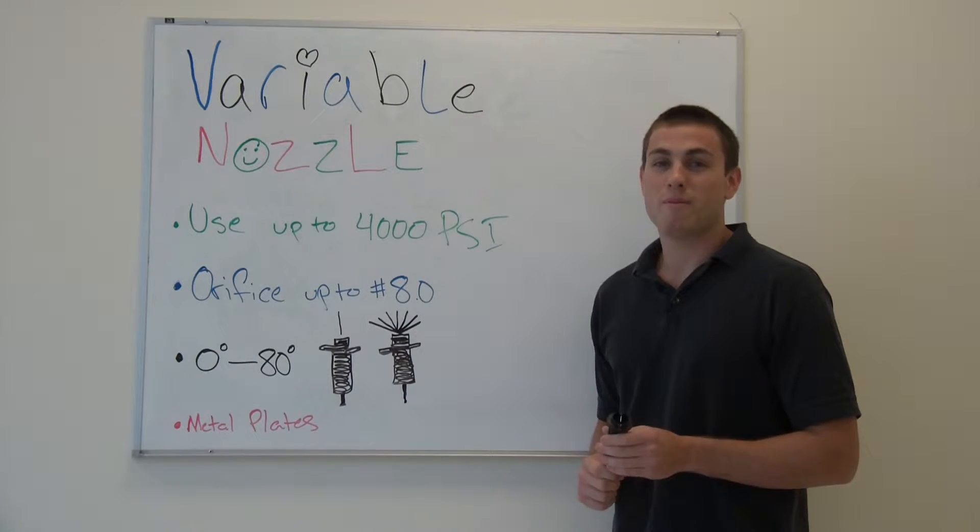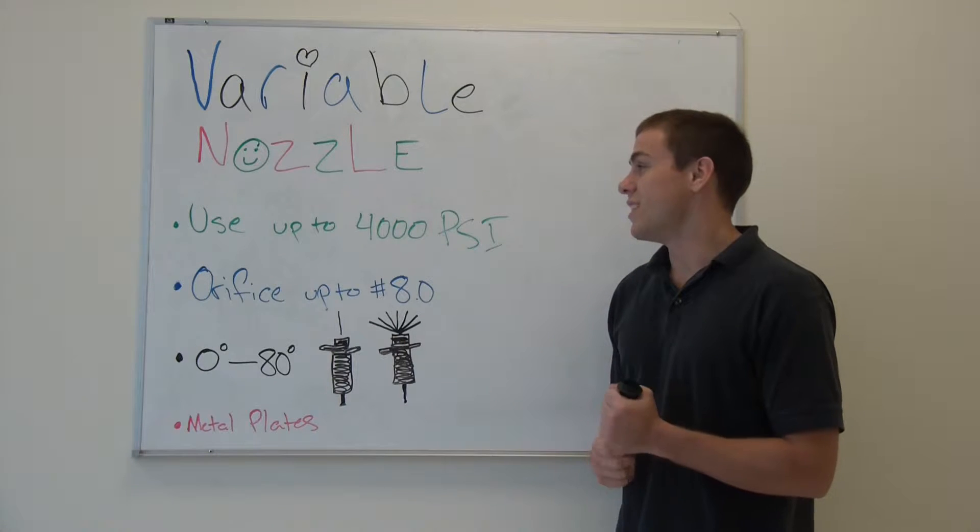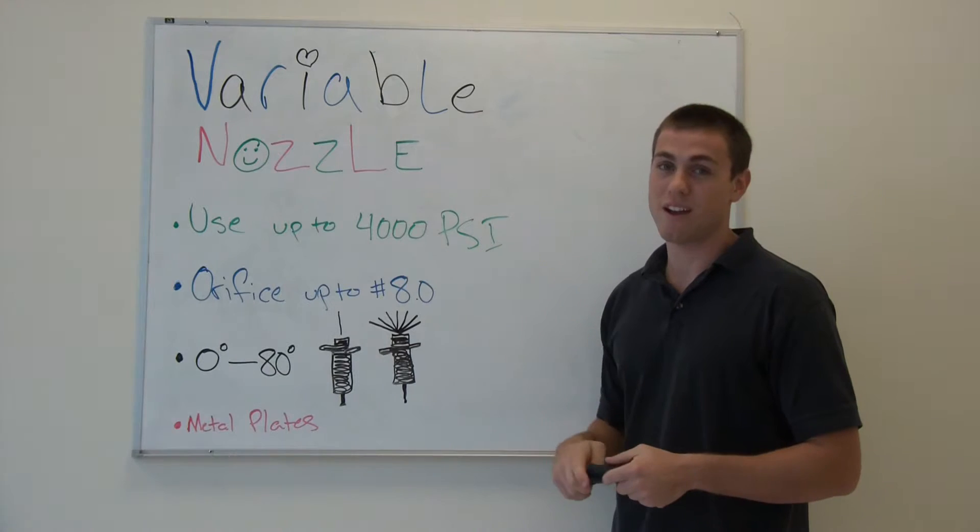Hello viewers, today we're going to talk about a variable nozzle. The variable nozzle can use up to 3,000 PSI and 4,000 PSI.